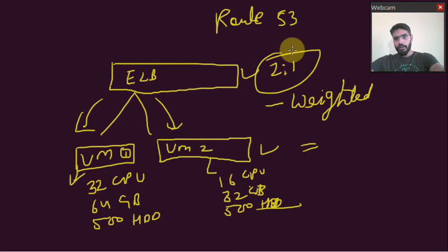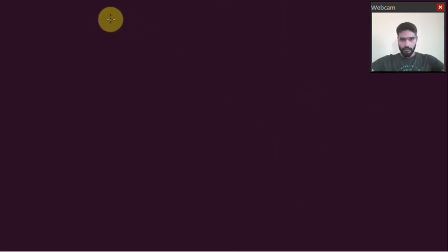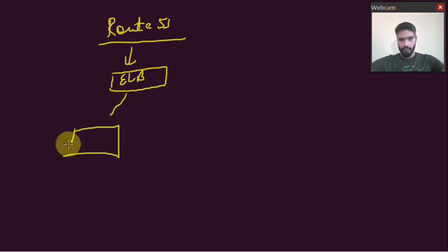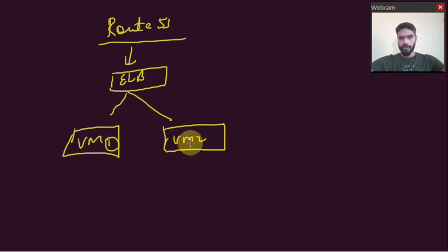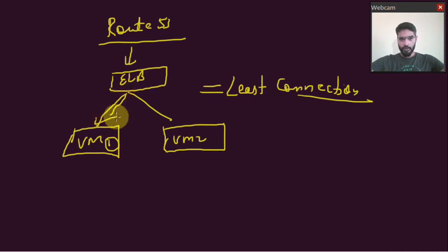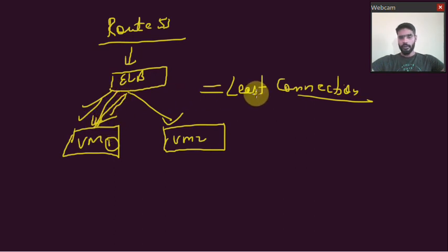The third algorithm is Least Connection. Your Route 53 sends a request to your ELB, and the ELB sends the request to your virtual machines — VM1 and VM2. The load balancer checks on each machine how many concurrent connections are currently being served. Wherever the load balancer finds that the number of connections is less, the new request will be sent to that particular machine.